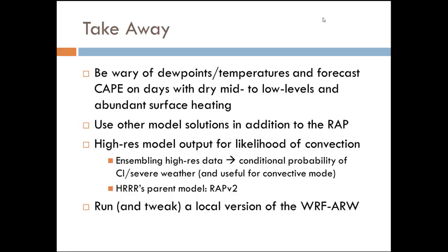It's also important to note that the HRRR parent model is the RAP version 2, so it's taking advantage of those updates, and the HRRR has been performing really well. That's also another tool you can look at to figure out what's happening in the operational version of the RAP. I always encourage you to run and tweak a local version of the WRF-ARW because in different convective situations — maybe nocturnal convection versus afternoon, squall lines versus supercells — there could be different parameterizations that work better. You can do local studies, figure out what works best for your neck of the woods, and then tweak and run it the way you want.